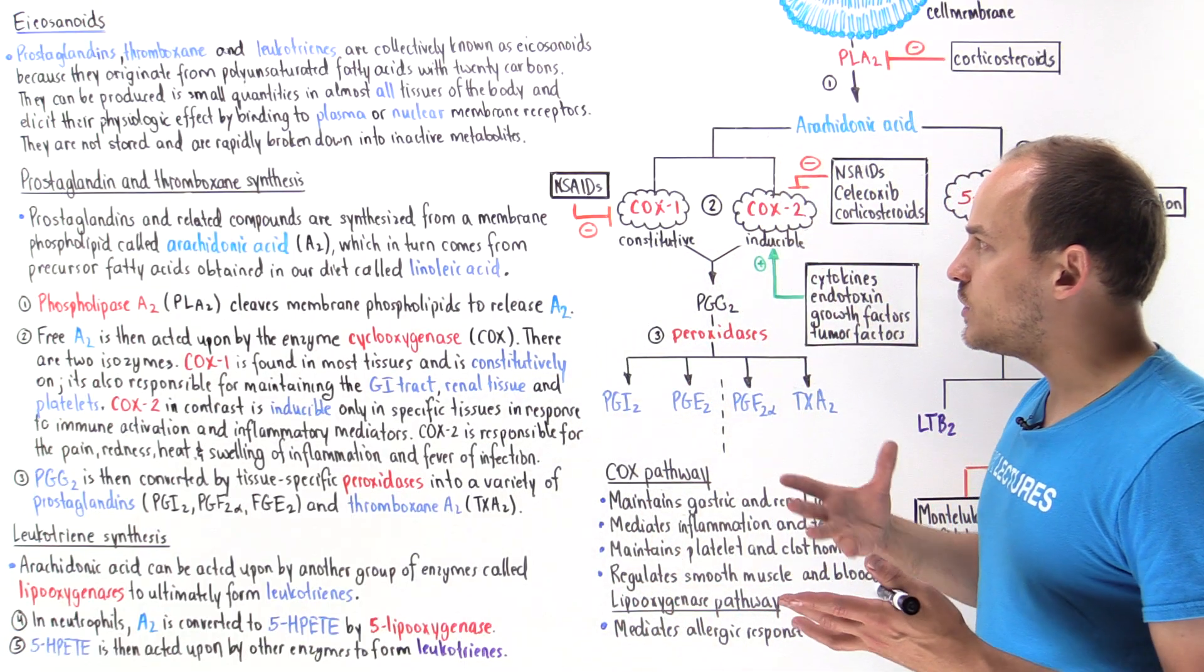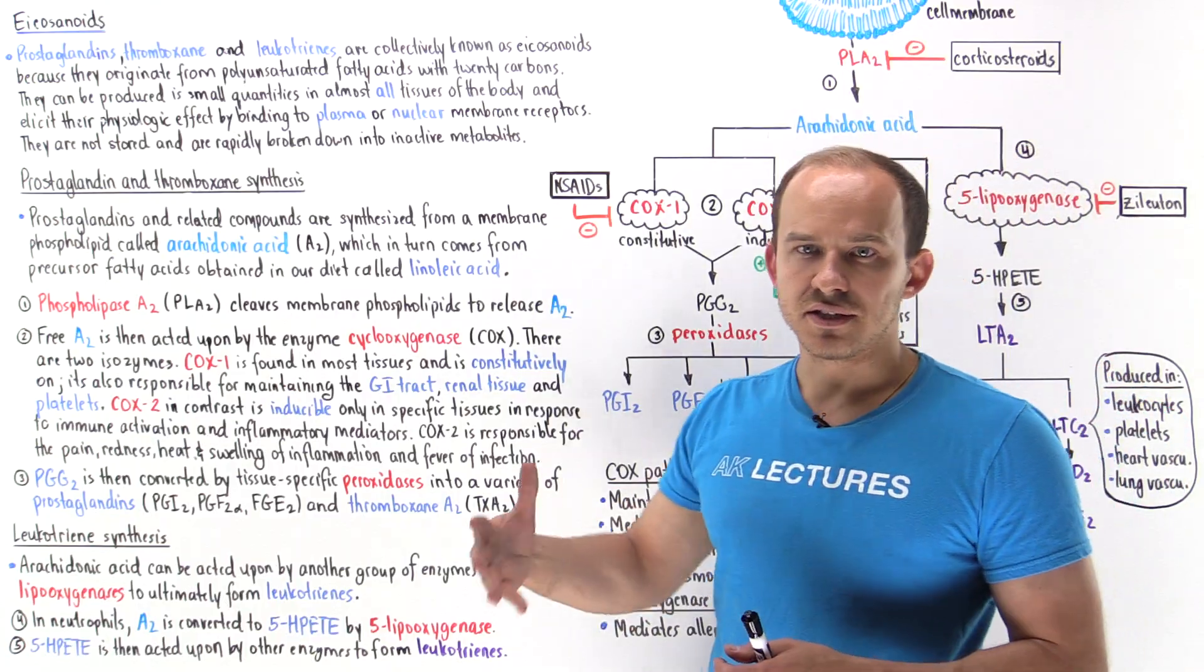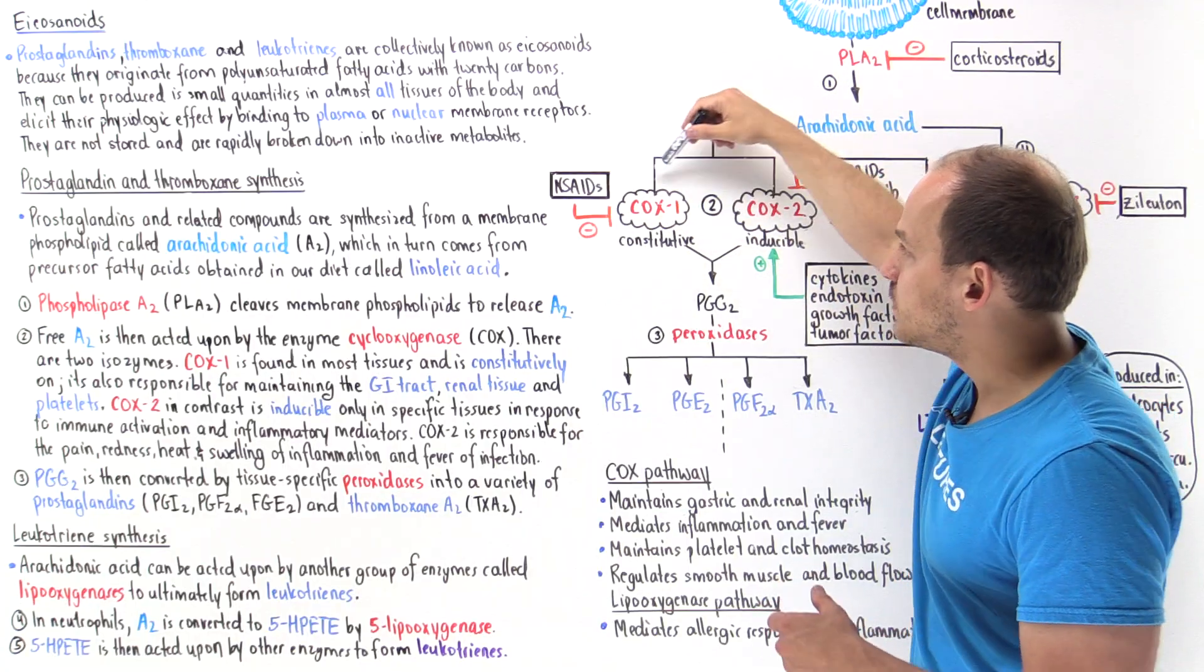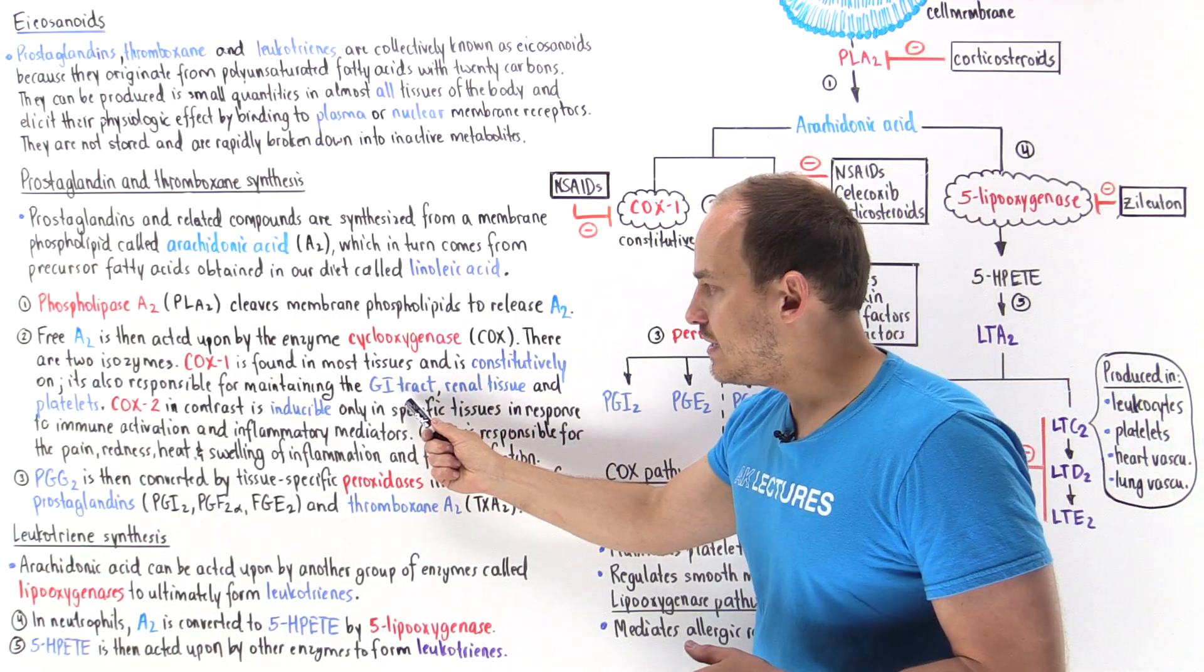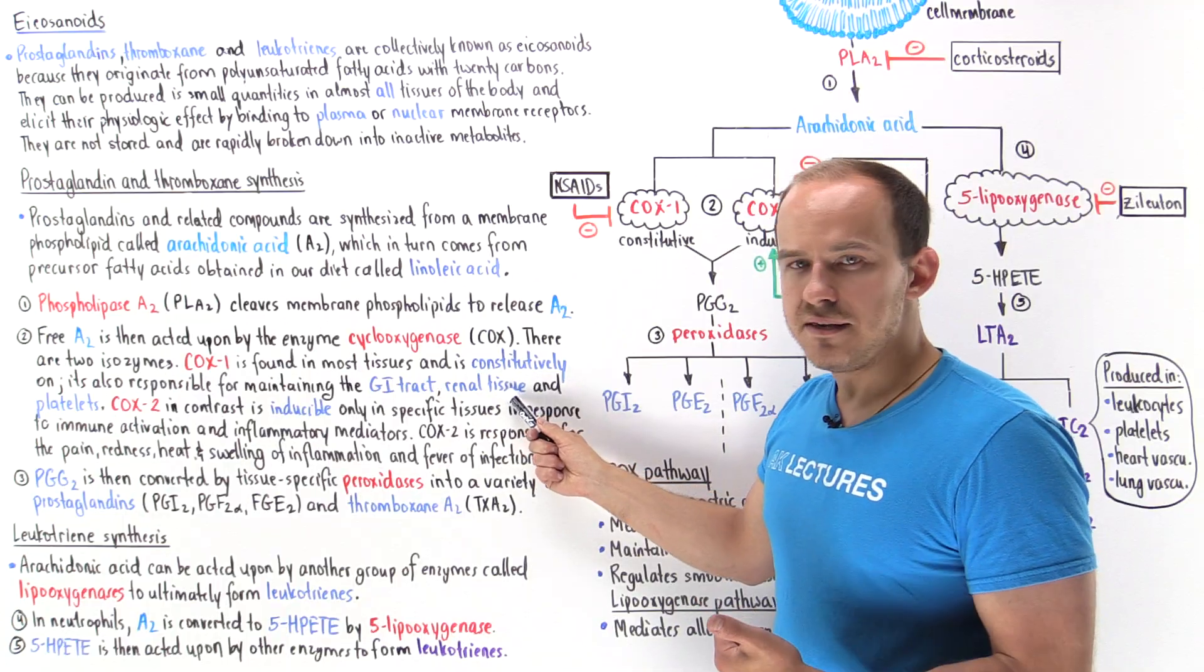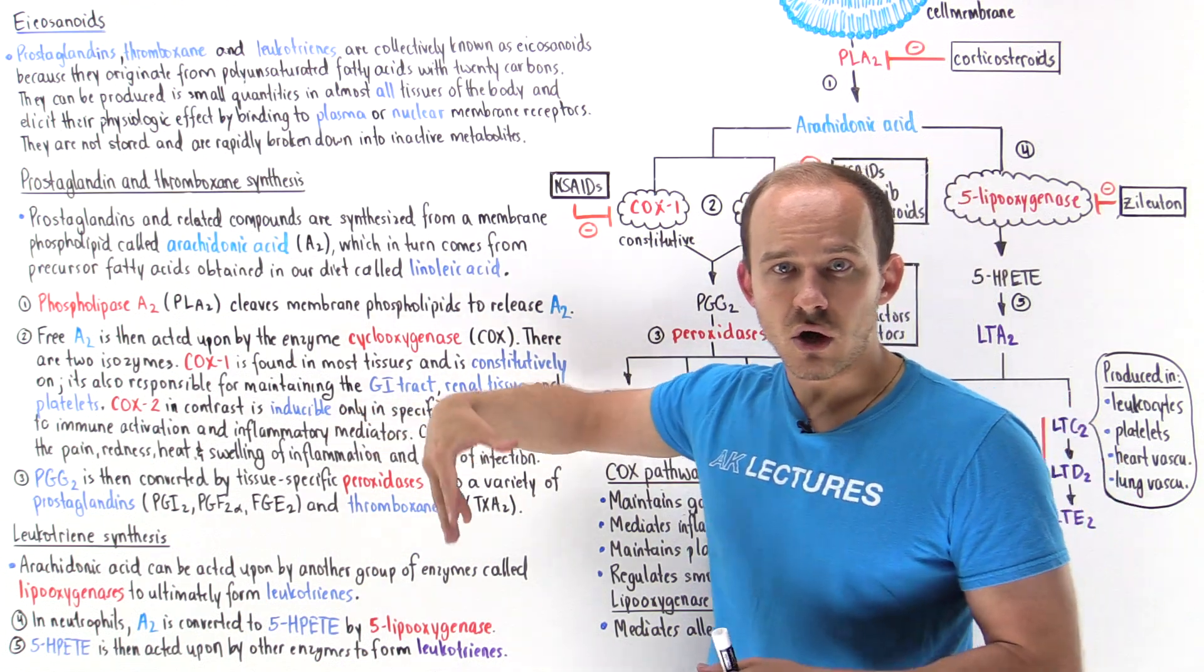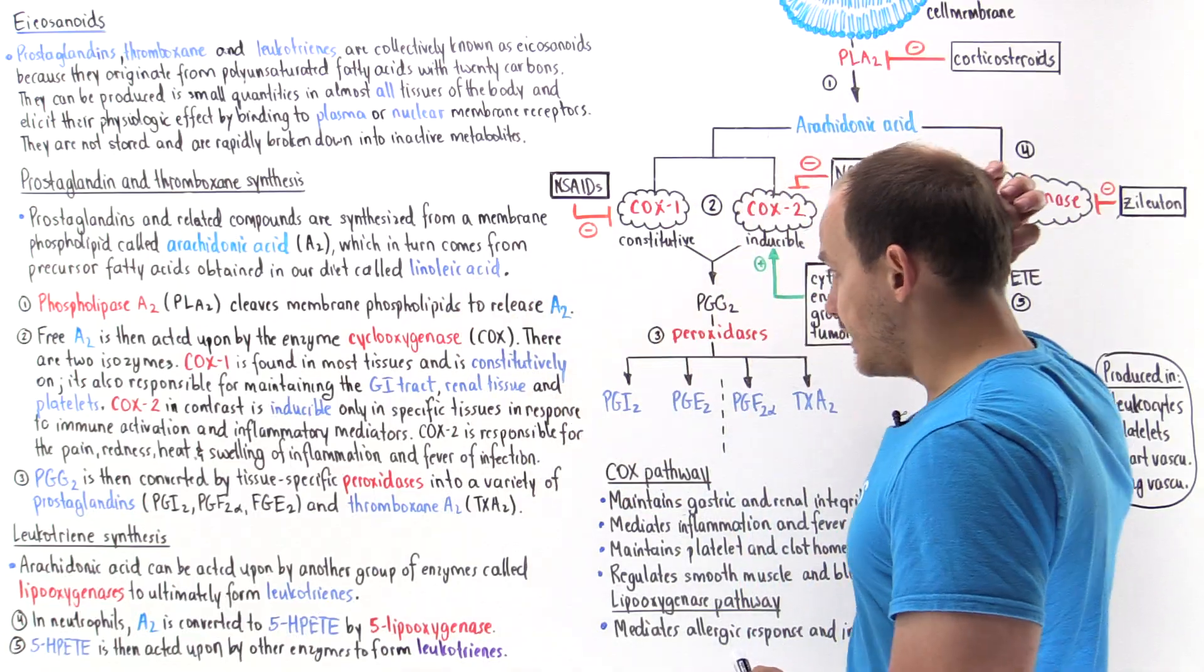If we use medications such as NSAIDs, either aspirin or things like indomethacin or naproxen, all of these will block COX1. By blocking COX1, we decrease the production of these vasodilators, which can cause ischemia in the GI tract causing ulcers to form and ischemia in the kidneys causing kidney damage. That's why NSAIDs can damage the GI tract, cause ulcers, and cause kidney injury and damage.